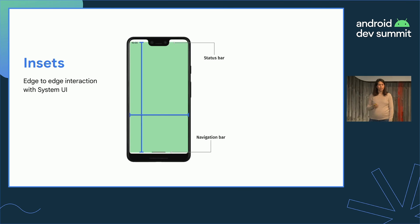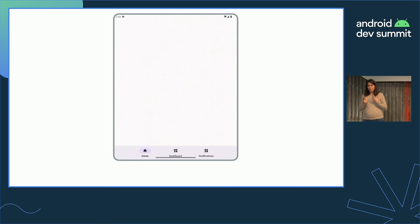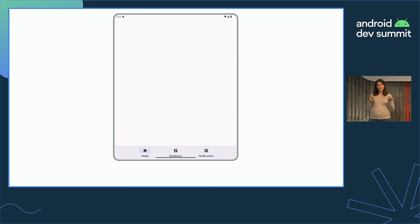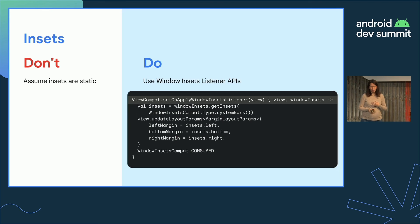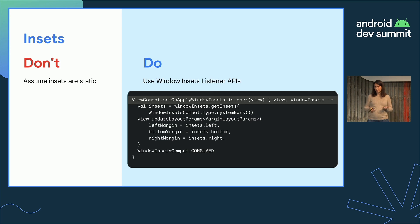Another common problem is insets — the relationship between an edge-to-edge app and the system UI, including the notch, gesture nav, and the new taskbar introduced in 12L. When you don't handle insets dynamically, things like the taskbar coming up from the bottom can obscure important parts of your app. For example, if you're using bottom navigation and the taskbar appears without you reacting to those insets, you lose a huge part of your app's functionality. Use the window insets listener APIs, which provide callbacks every time insets change, and update your margins accordingly.